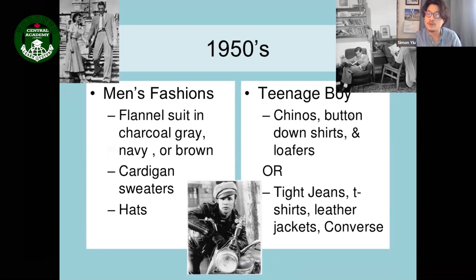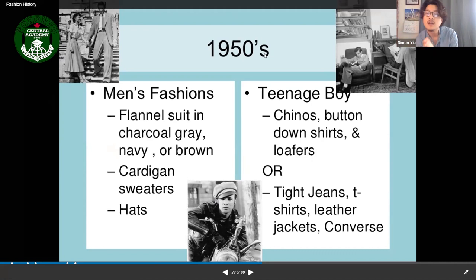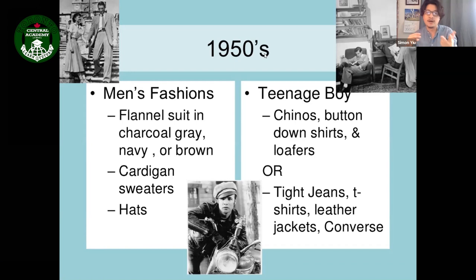For the bad-boy look, teenage boys wore tight jeans, t-shirts, and leather jackets. Sneakers became hugely popular in the 1950s — Pumas, Converse, and Adidas started getting big. The 1950s was the first era where the fashion industry deliberately targeted teenagers with their own clothing lines.